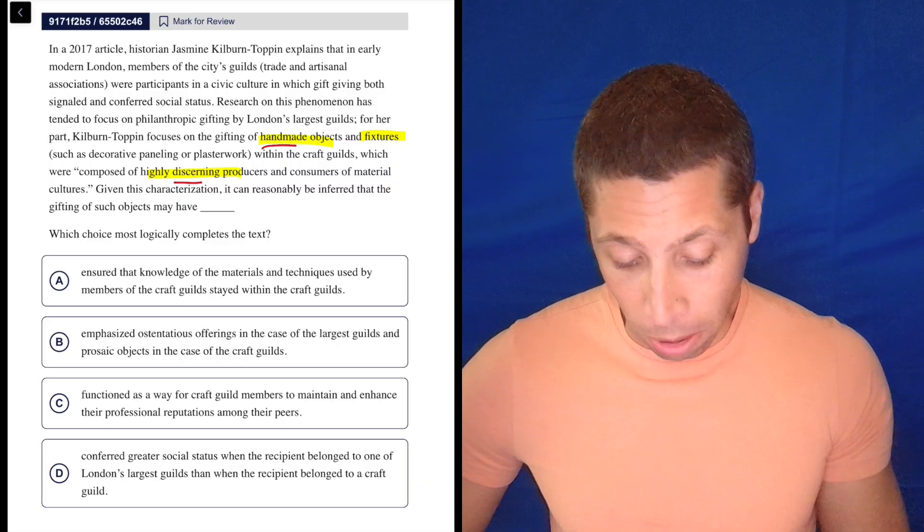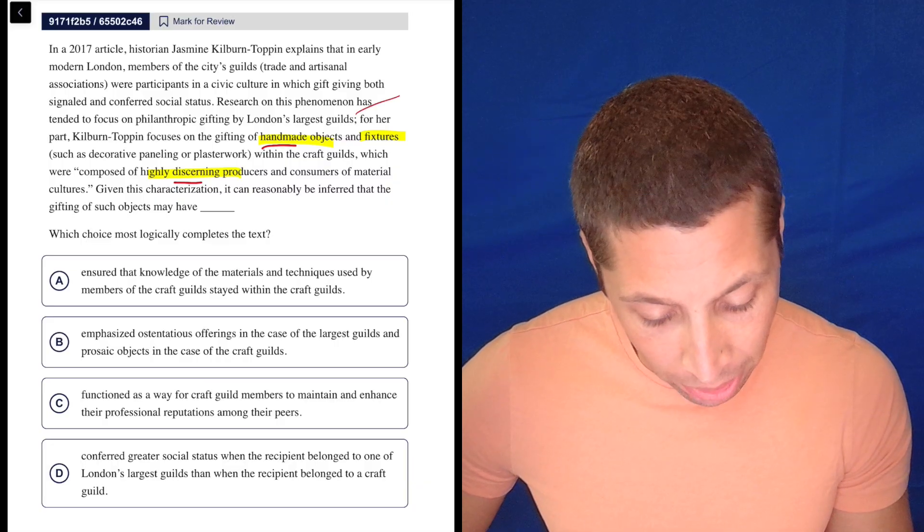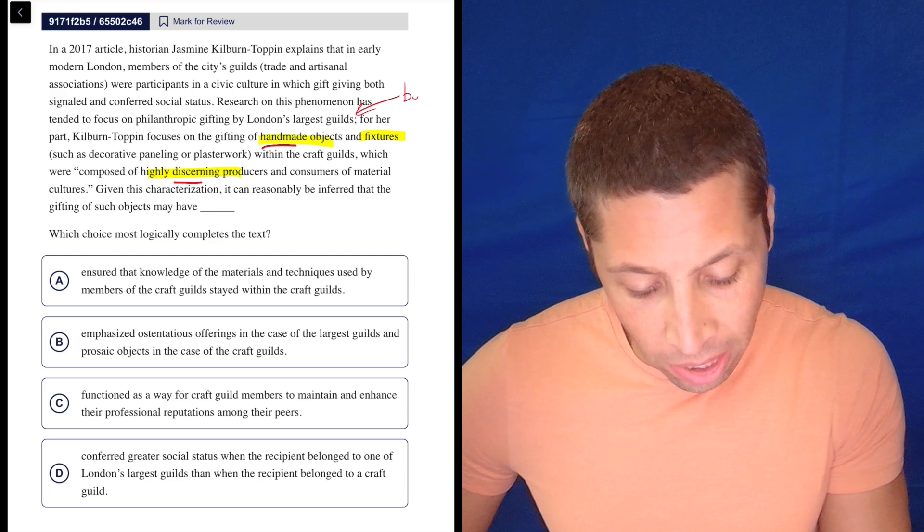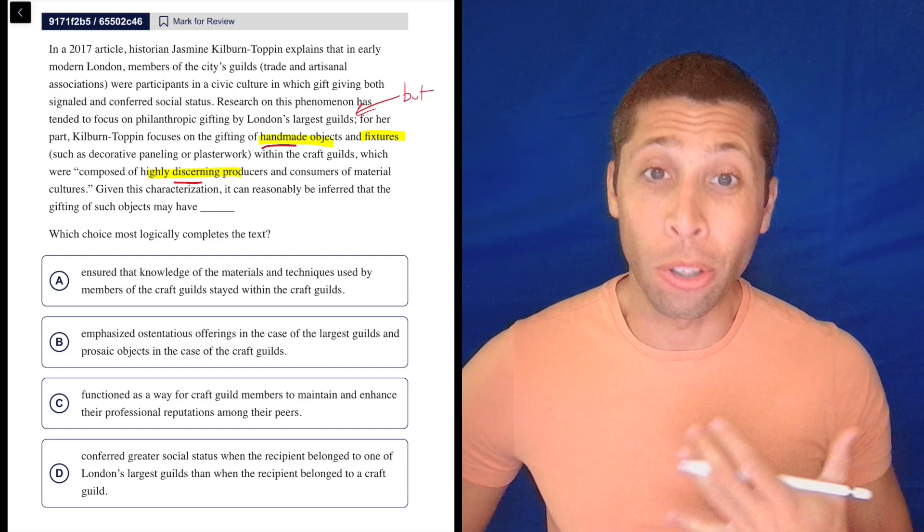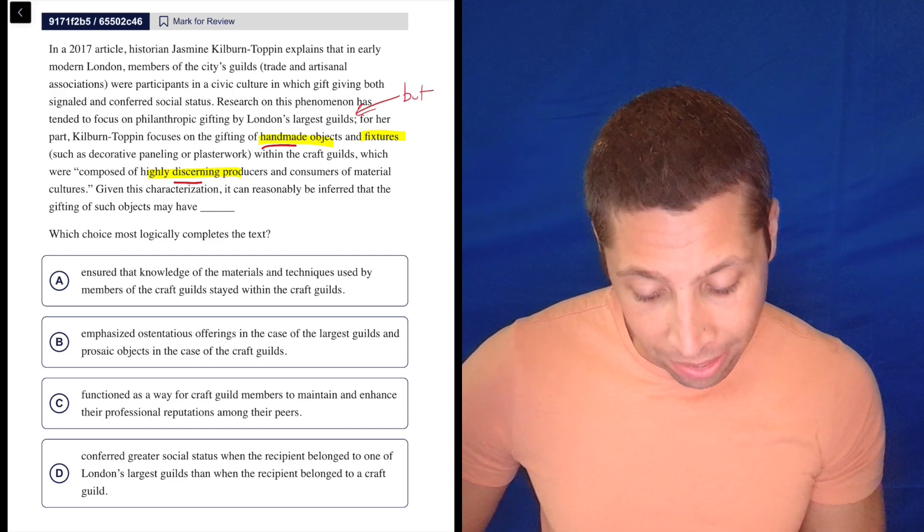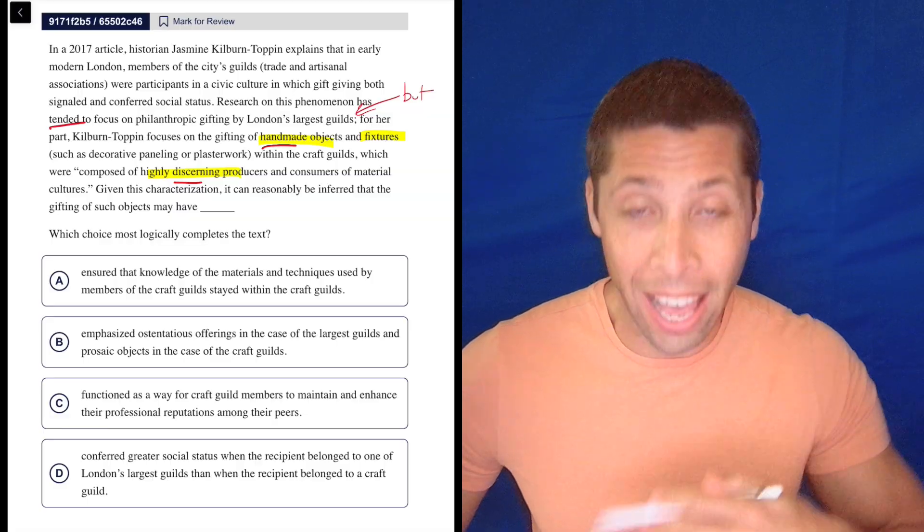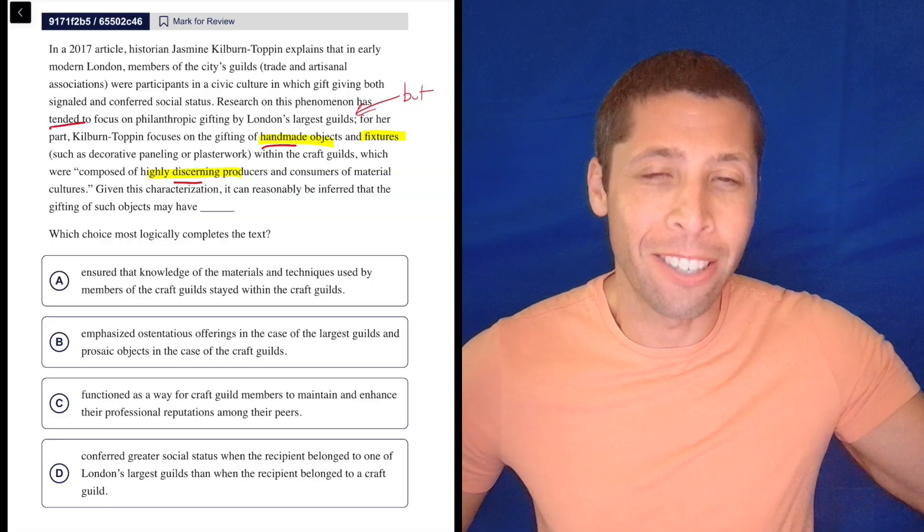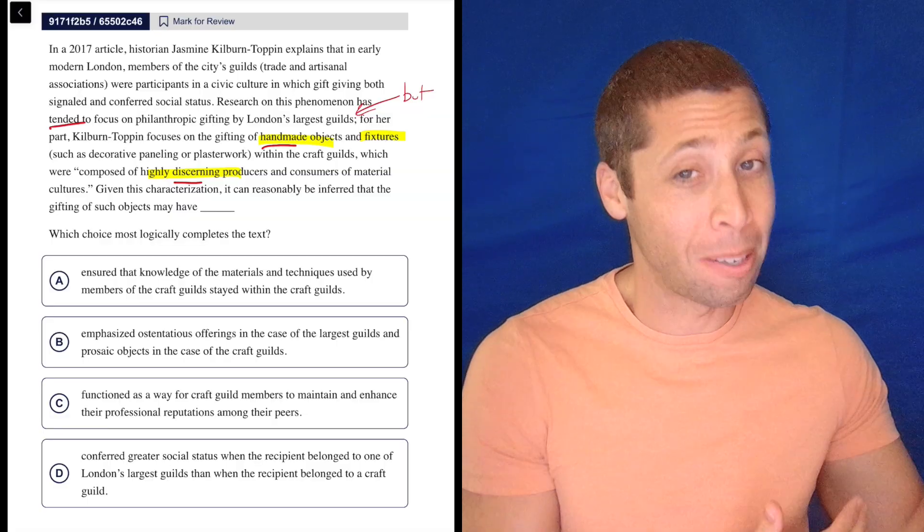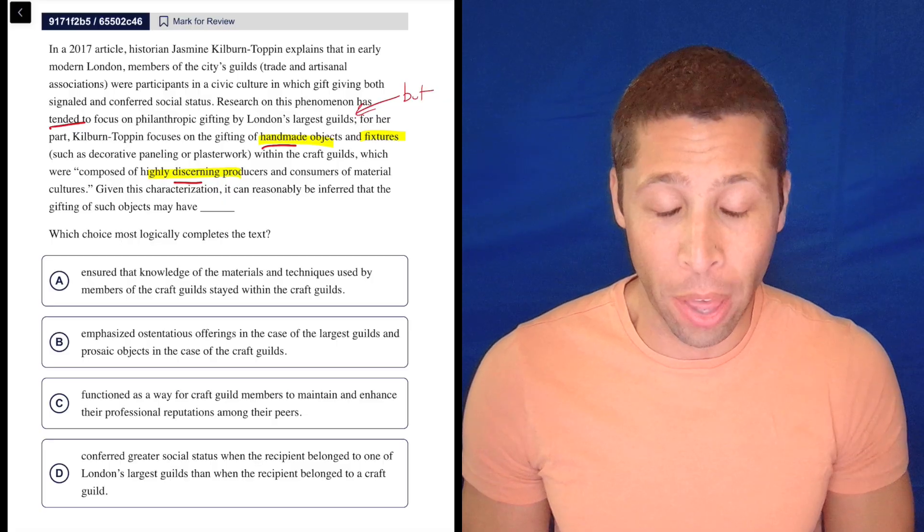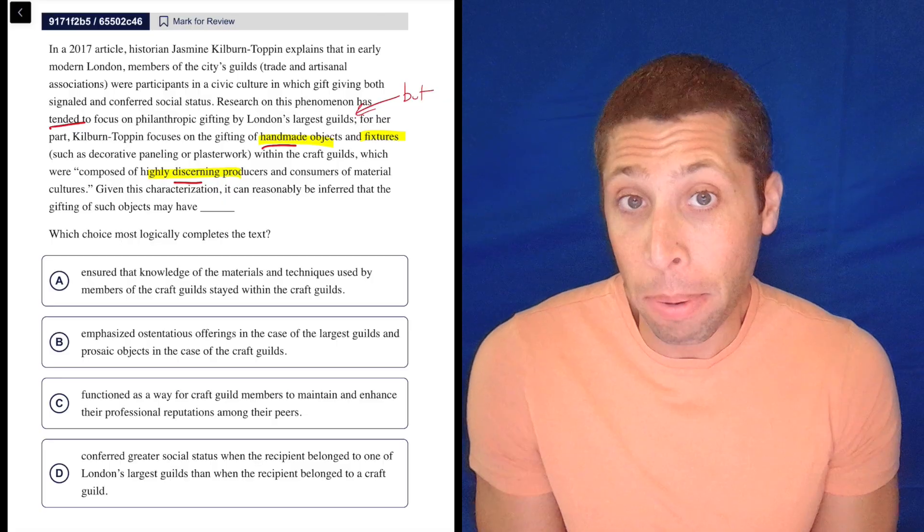So I don't see the word but, but just kind of like right there, I was noticing a but. So that's the kind of thing that you can train your brain to kind of pick out. The fact that it said that research has tended to focus on one thing, but it seems like this other person focuses on other things. So I don't really know what the blank is going to be, but let's take a look at the choices.